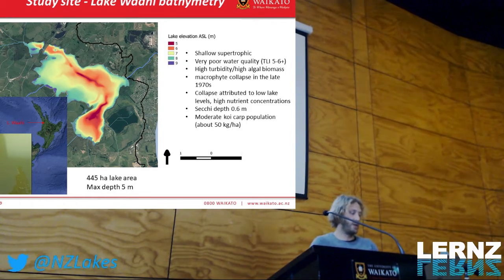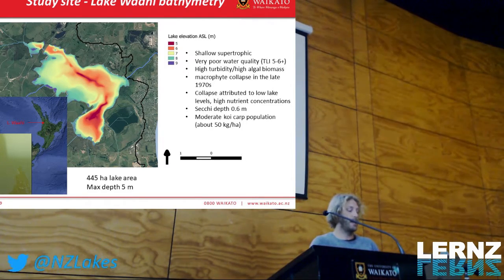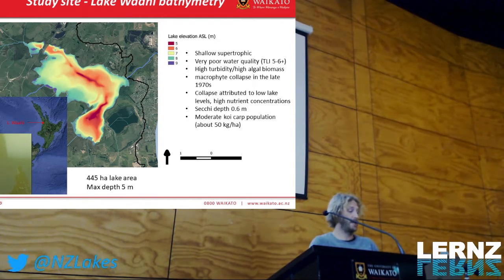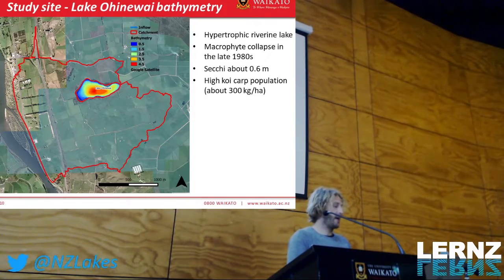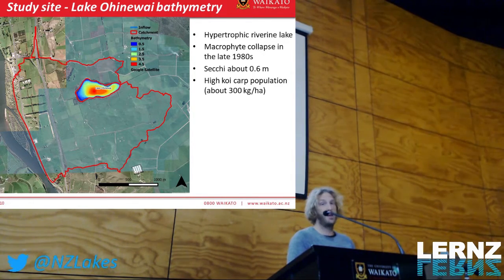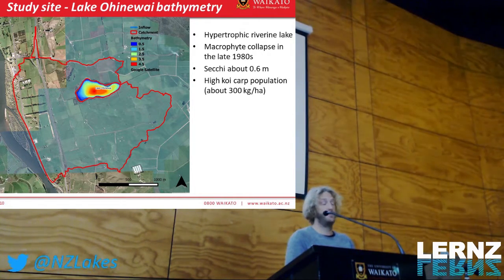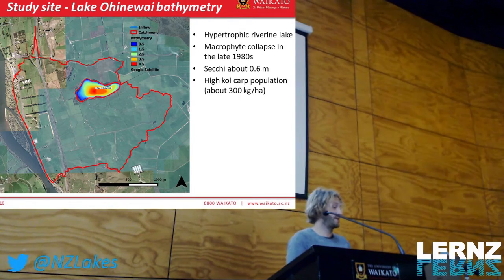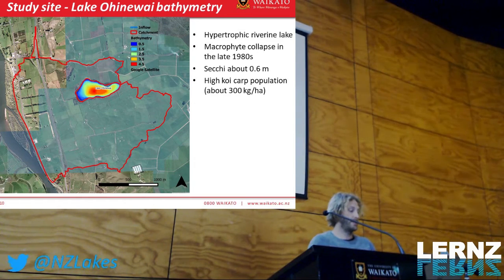The lakes are supertrophic — there was a macrophyte collapse in the 1970s, really turbid conditions, low Secchi depth. Lake Papin has a moderate carp population of about 50 kg per hectare. In Mako Herna, carp are at much higher densities — 300 kg per hectare. This is a fairly high density, and overseas carp populations have been shown to reach much higher densities, though 300 kg per hectare is really high and the ecological impacts can be significant.